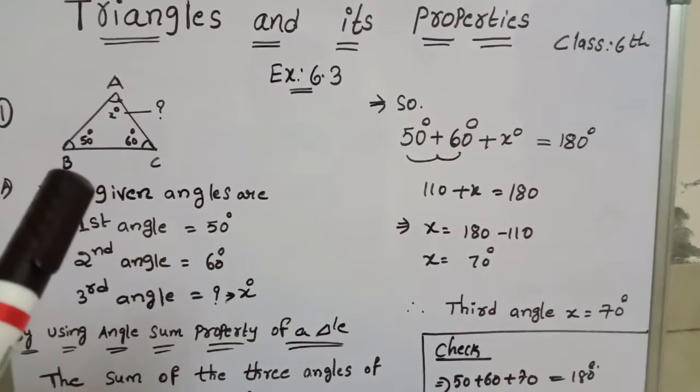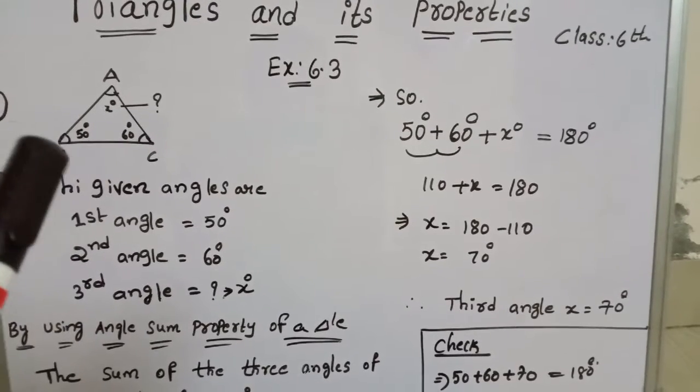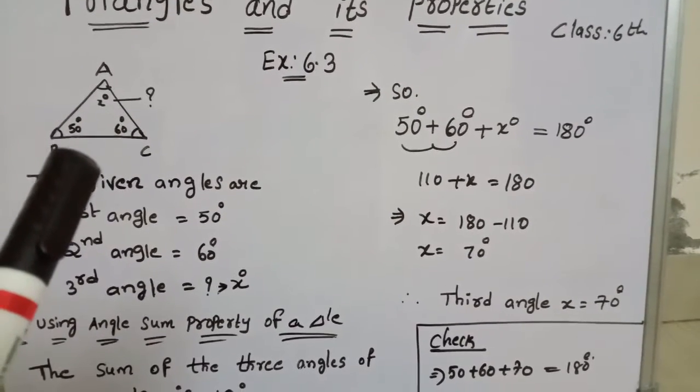It is a triangle. It is a closed figure with 3 straight lines and it has 3 sides, 3 vertices and 3 angles.